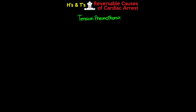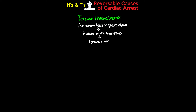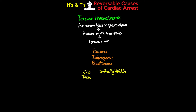Tension pneumothorax is next. Here, air accumulates in the pleural space and, if it builds to tension, places pressure on the heart and large vessels, decreasing preload and cardiac output. Causes include trauma, iatrogenic causes such as a recently placed central line, or barotrauma in a ventilated patient. Assess for JVD, difficulty ventilating, tracheal deviation, uneven breath sounds, and review any available chest X-ray. Treatment is needle decompression followed by chest tube placement.